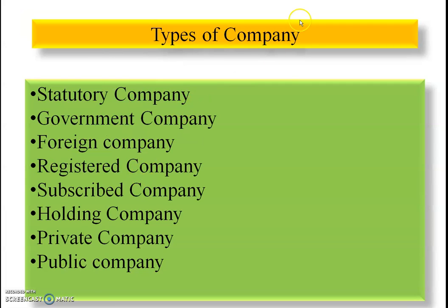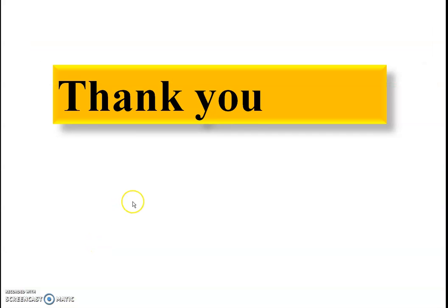The types of company include: statutory company, government company, foreign company, registered company, subscribed company, holding company, private company, and public company.